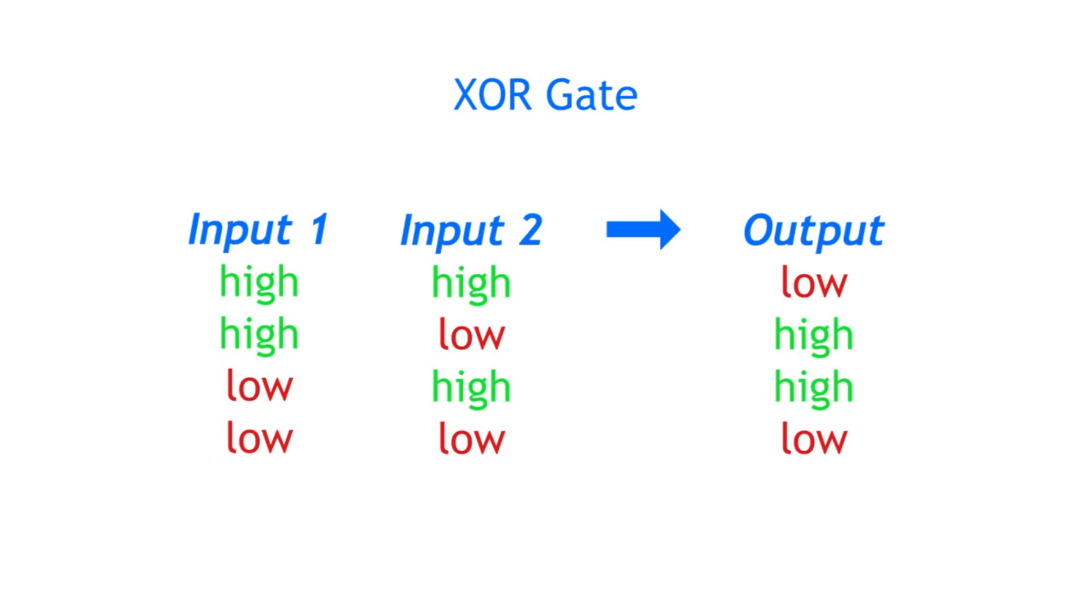An exclusive OR gate will only output a high signal when one input is high and the other is low.